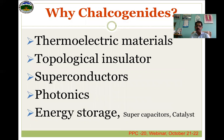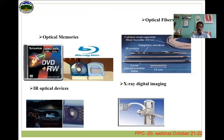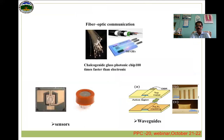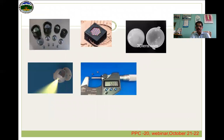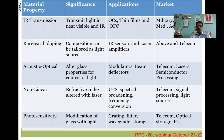They are used as thermoelectric materials, topological insulators, superconductors, photonics, energy storage, supercapacitors, and as catalysts. Some application areas include optical memories, IR optical devices, X-ray digital imaging, optical fibers, optical communications, sensors, and waveguides — these are all areas where chalcogenide glasses are being used.